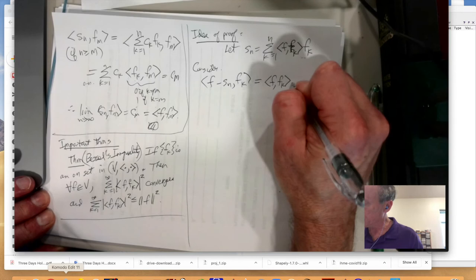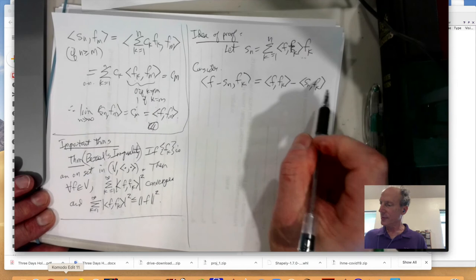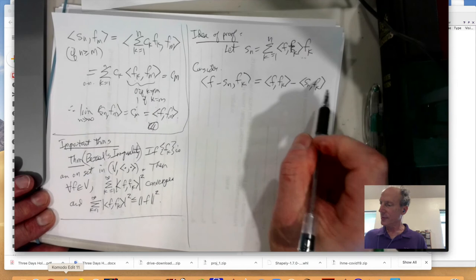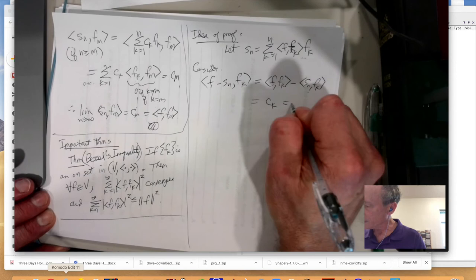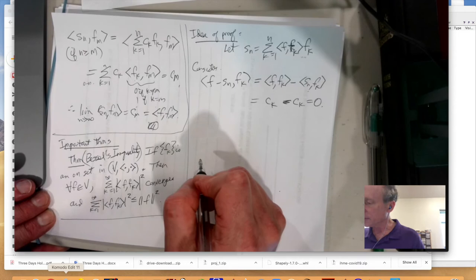So, just by the linearity of the inner product, get this. But, wait a minute. We just computed this over here. This is equal to CM, CK. So, that equals zero. Wow.